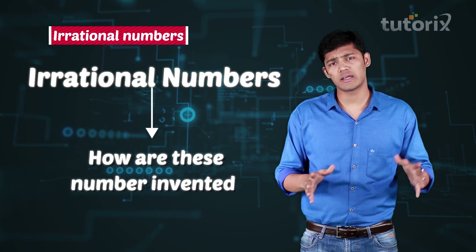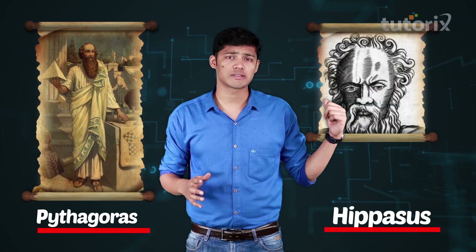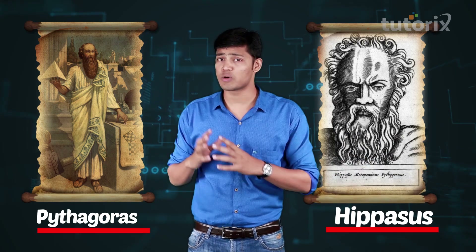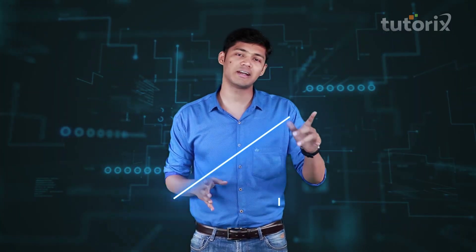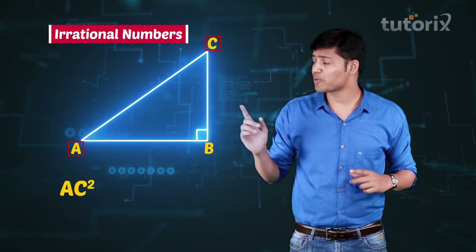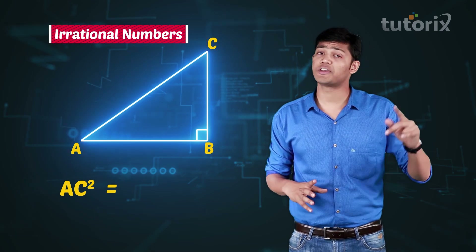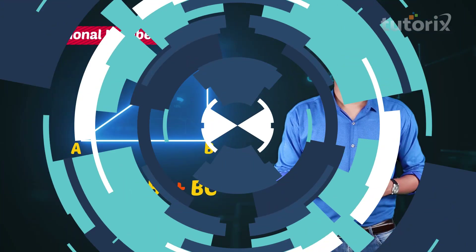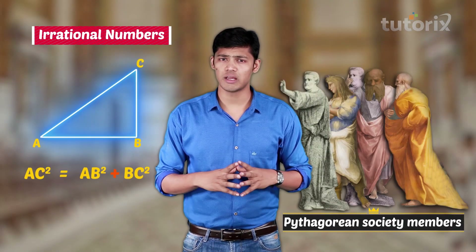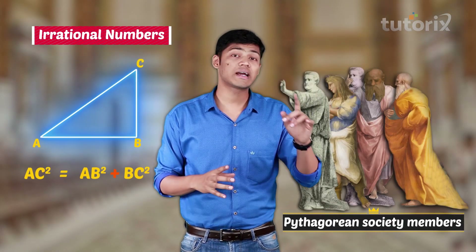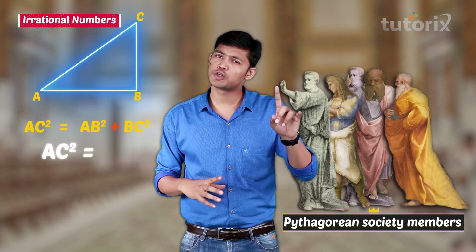The question we should ask ourselves is: how did they manage to invent these irrational numbers? Because these numbers are not intuitive like integers and rational numbers. The road to inventing irrational numbers is very interesting. The credit goes to both Pythagoras and Hippasus. We all know that Pythagoras gave us the famous Pythagoras theorem: in a right-angled triangle, the square of the length of the hypotenuse is equal to the sum of the squares of the lengths of the other two sides. The members of the Pythagorean society encountered a new number when they considered both legs of the right-angled triangle to be of unit length.